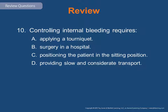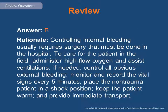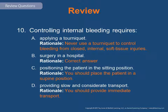Review question 10: Controlling internal bleeding requires applying a tourniquet, surgery in a hospital, positioning the patient in the sitting position, or providing slow and considerate transport? The answer is B — controlling internal bleeding usually requires surgery in a hospital. To care for the patient in the field: administer high-flow O2, assist ventilations if needed, control obvious external bleeding, monitor and record vital signs every five minutes, place the non-trauma patient in a shock position, keep the patient warm, and provide immediate transport. A tourniquet is never used for closed internal soft tissue injury. Position the patient supine, not sitting. And transport is immediate, not slow.